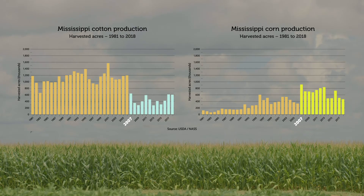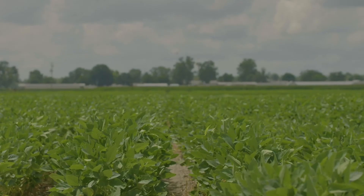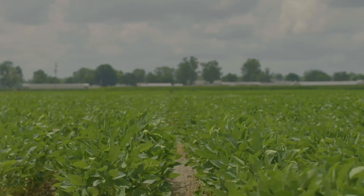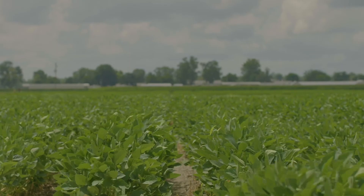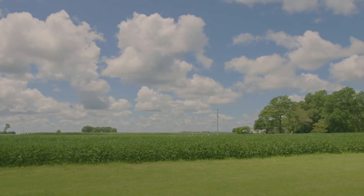Growers benefited economically, but in the long run with the K removal rates in the soil, coinciding when that change happened, we had potash prices spike. As potash prices spiked, producers really couldn't afford to put it out for a couple years. That, coupled with moving to the grain-based system and that nutrient demand and removal being so much greater, led us into a hole where we declined our soil test levels, and now 13 years later we're still trying to climb out of that hole.